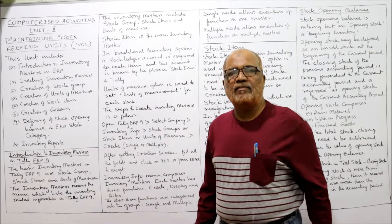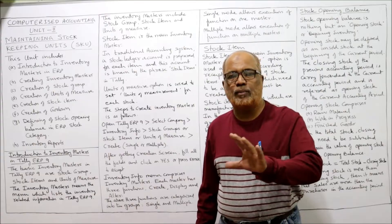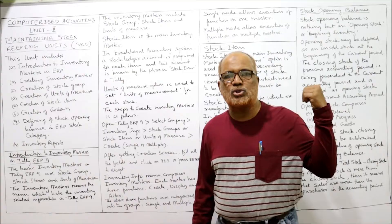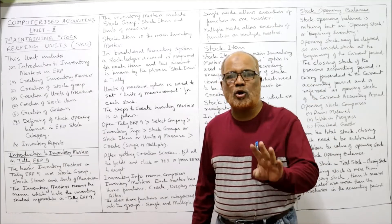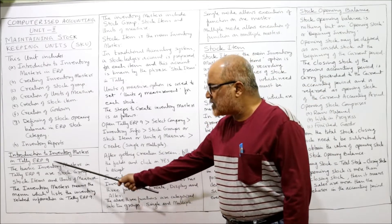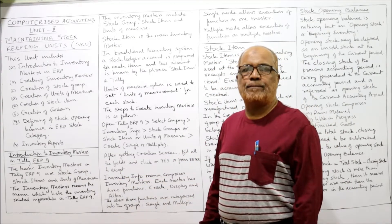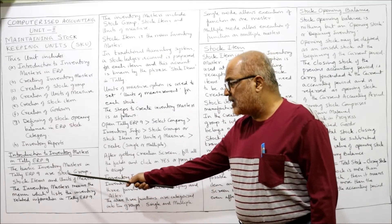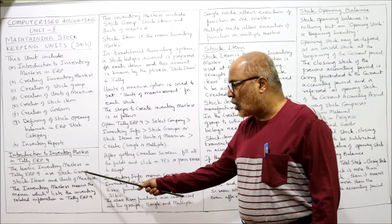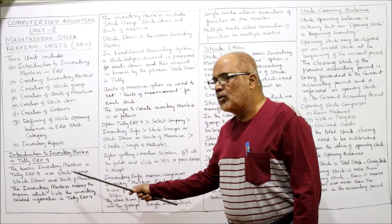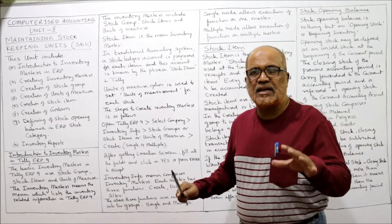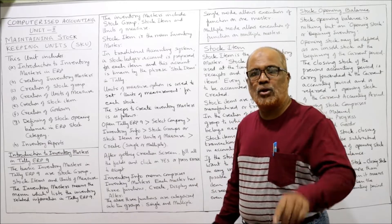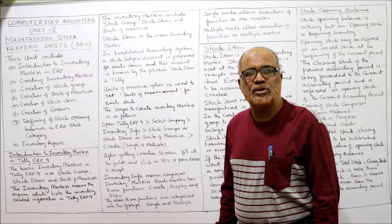What is inventory masters in ERP 9? The basic inventory masters in Tally ERP 9 are stock group, stock items, and units of measure. Inventory masters means the menu which lists down all the inventory-related information in Tally ERP 9. These three things — stock group, stock item, and units of measure — combined together constitute inventory masters.